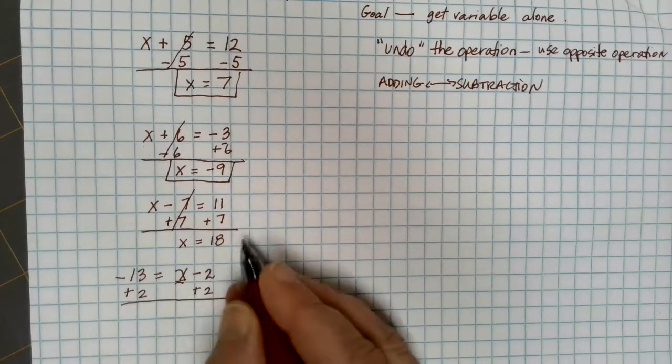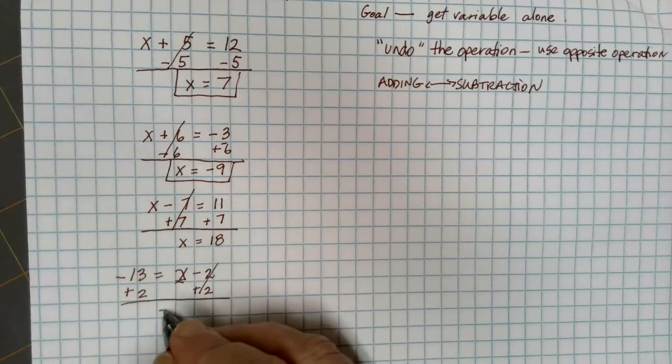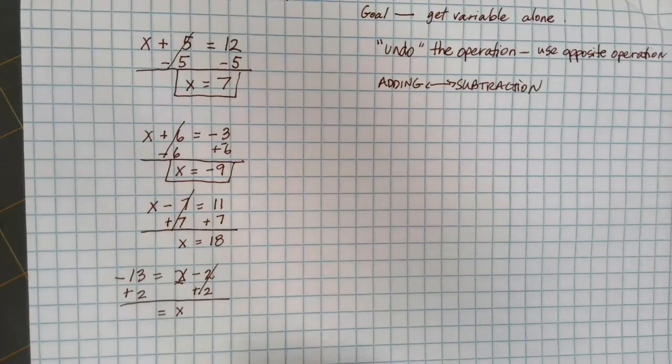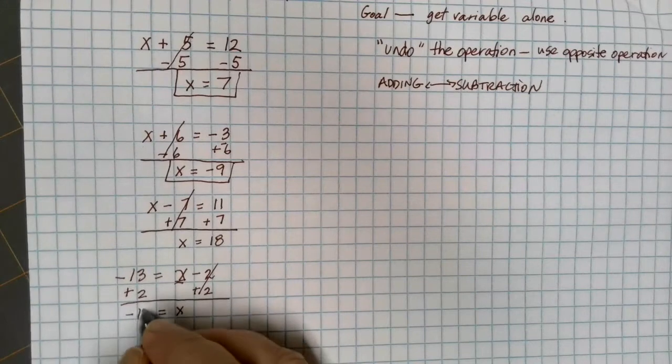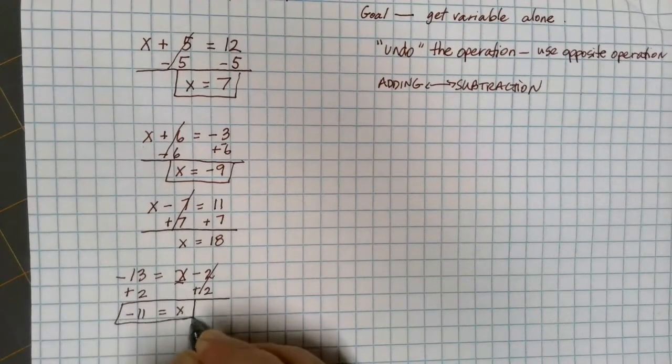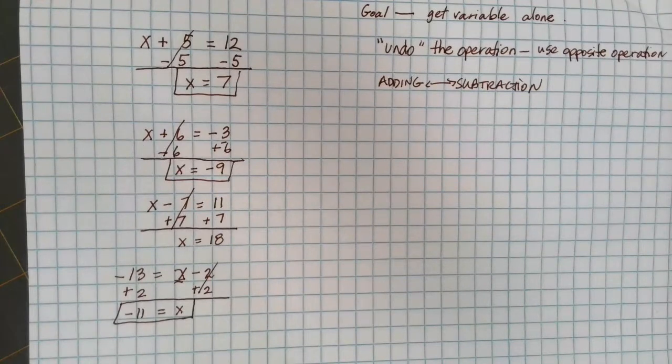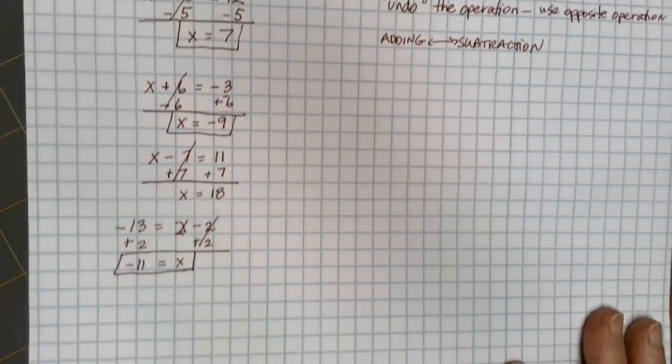The minus 2 and the plus 2 get me 0, so that's out of the way. The x is by itself. And on the other side, I have negative 13 plus 2, which gives me a negative 11 as a solution. So it doesn't really matter which side the variable is on. What we're always worried about is getting the variable alone by undoing anything that's going on on the same side of the equation as it.